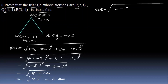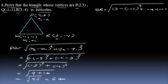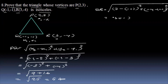So 3 minus minus 1, the whole square, plus minus 4 minus 1, the whole square. This is 3 plus 1, the whole square, plus minus 4 plus 1, the whole square.